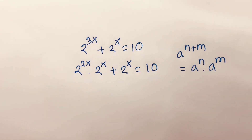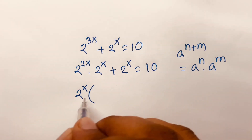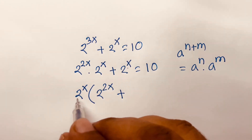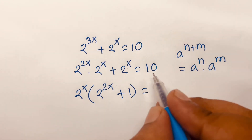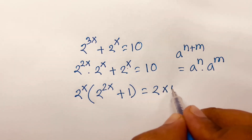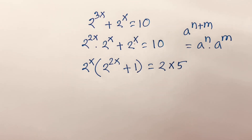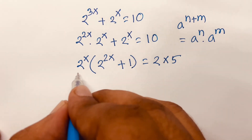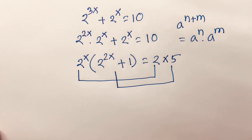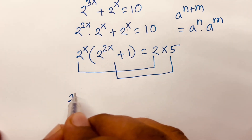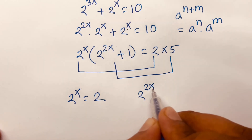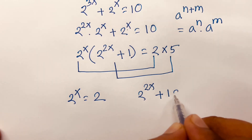I can say 2 to the power x is common. Factoring it out: 2 to the power 2x plus 1 is equal to 10, which is like 2 times 5. So I can say 2 to the power x equals 2 and this term equals 5, meaning 2 to the power x equals 2 and 2 to the power 2x plus 1 equals 5.